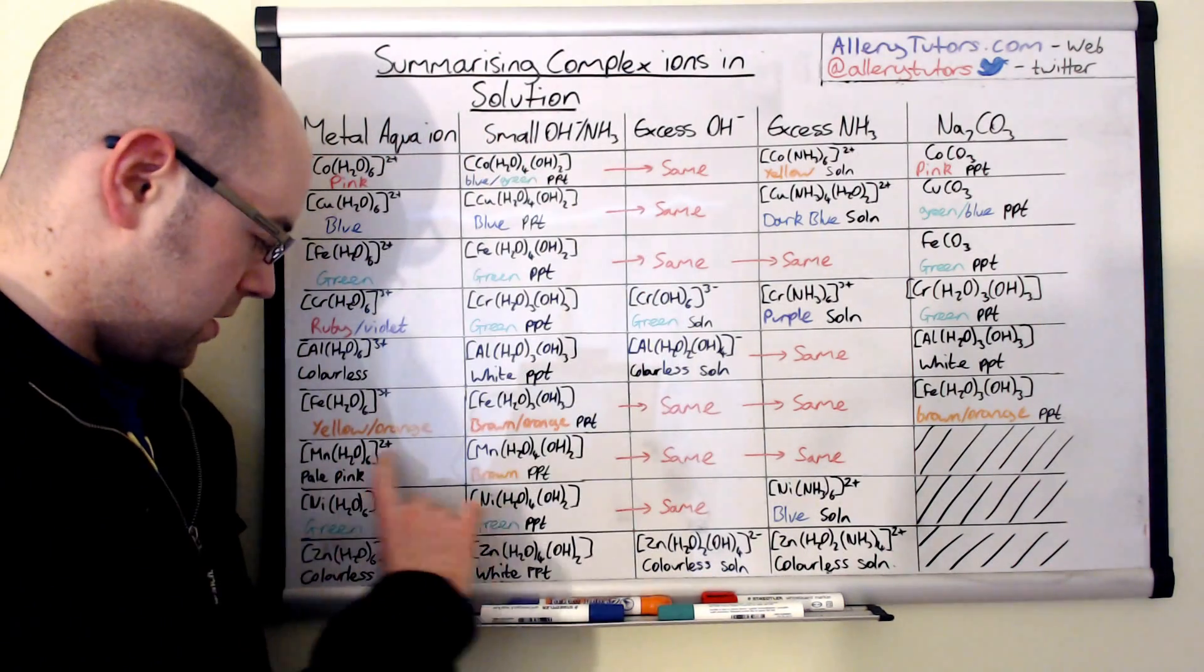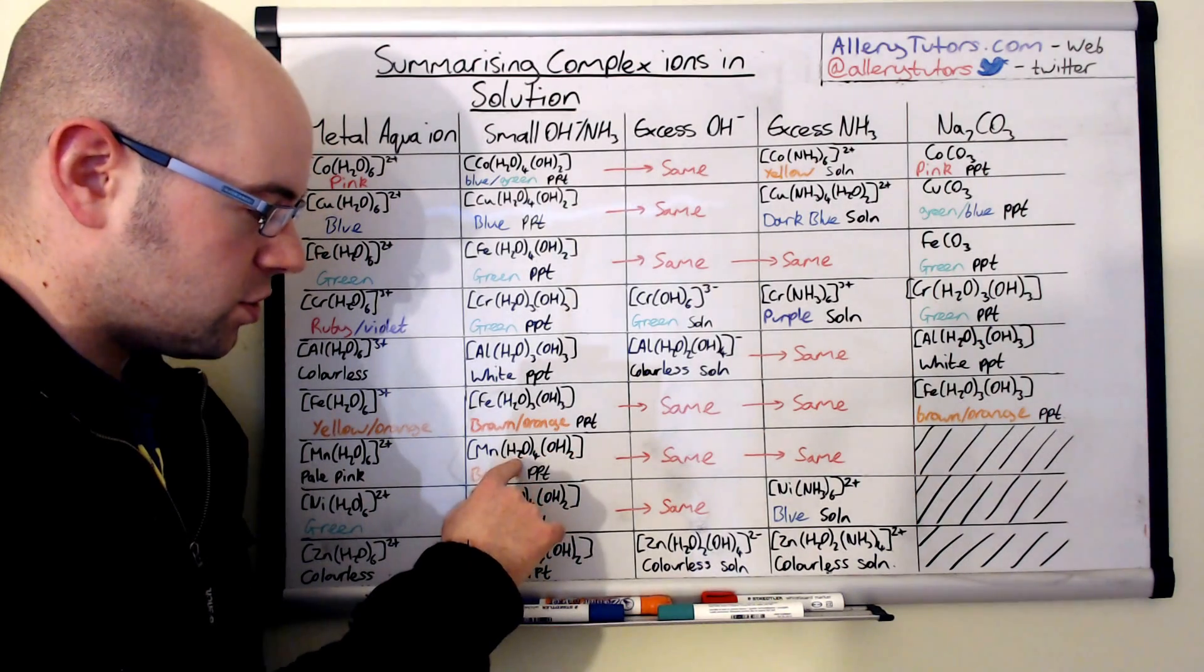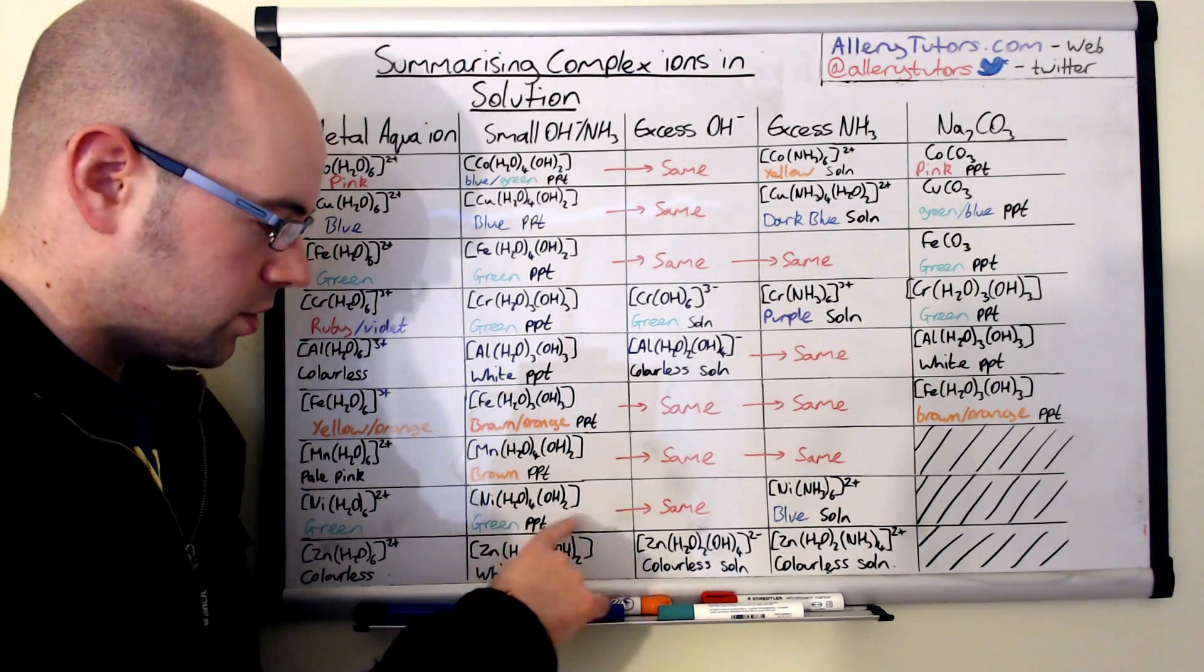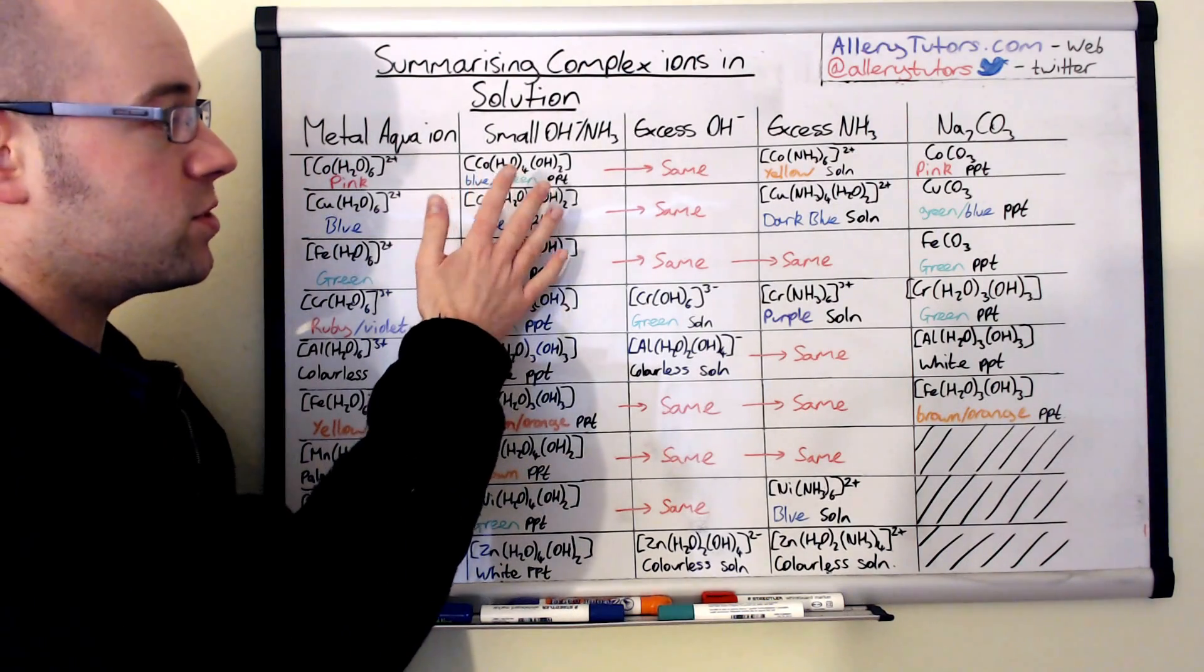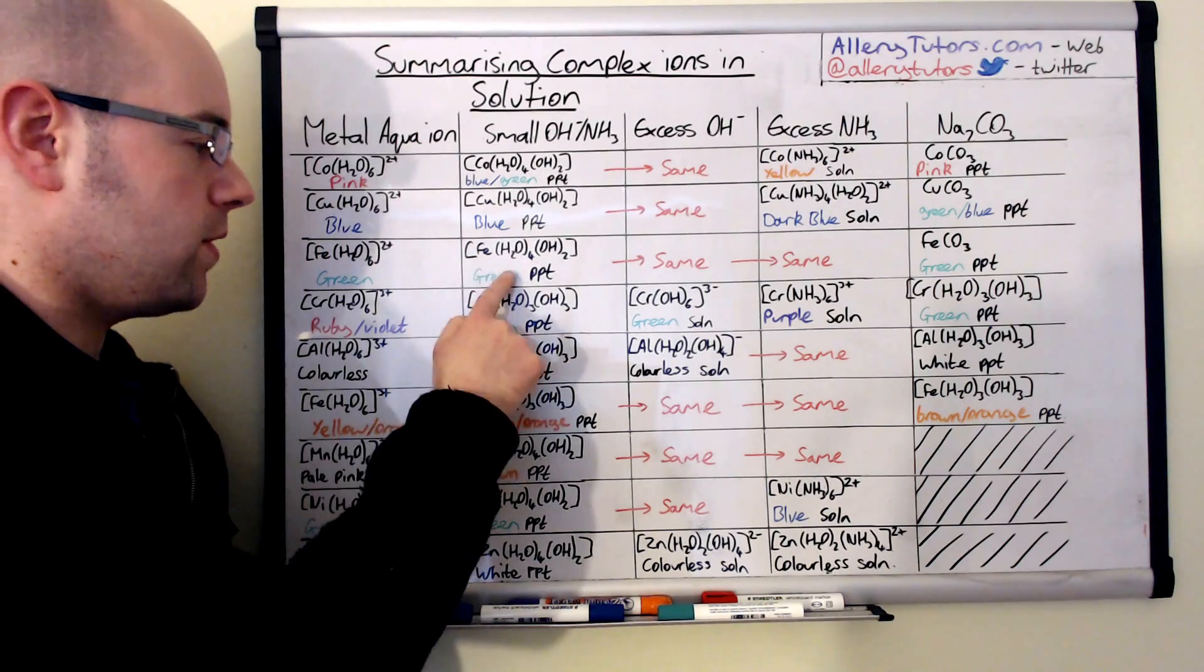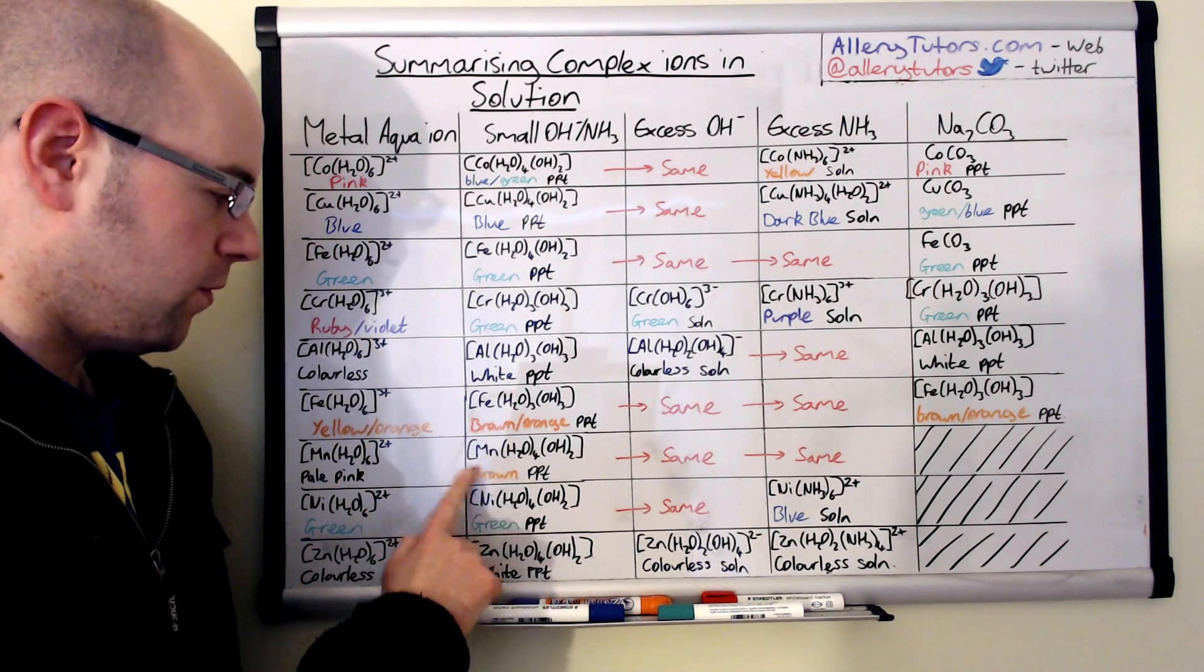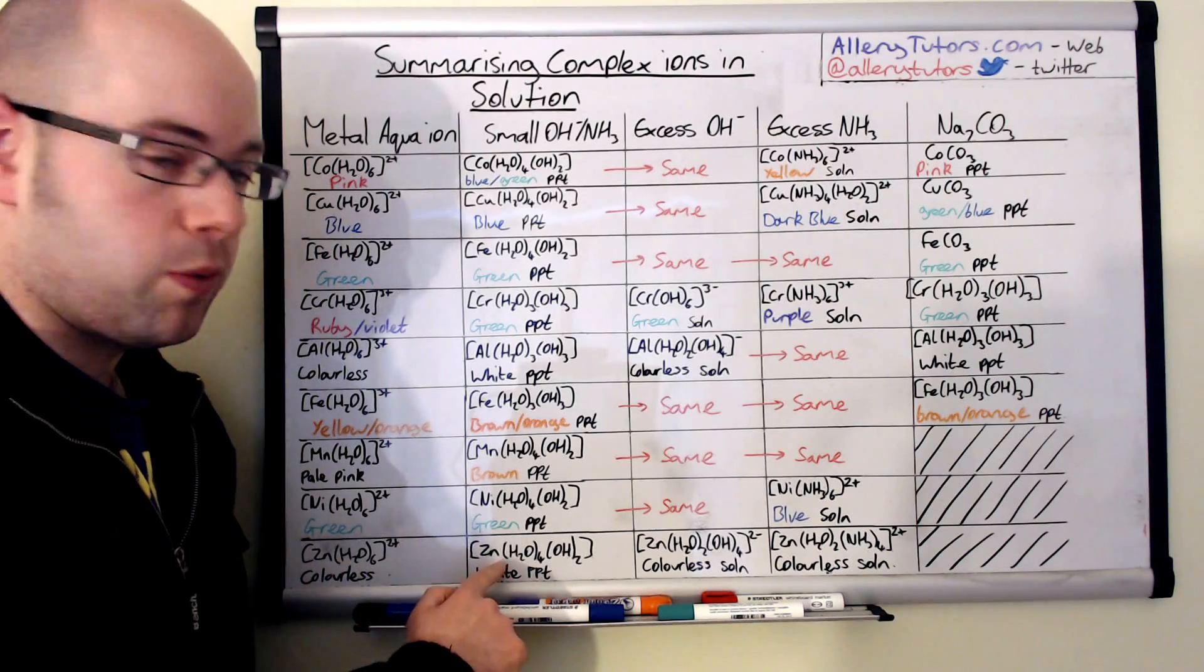All the 2+ ones will form H2O4(OH)2 and they're all the same. The colours: cobalt will form bluey green precipitate, the copper will form blue, iron 2 will form green precipitates, the manganate one will form a brown precipitate, the nickel is green and the zinc is white.